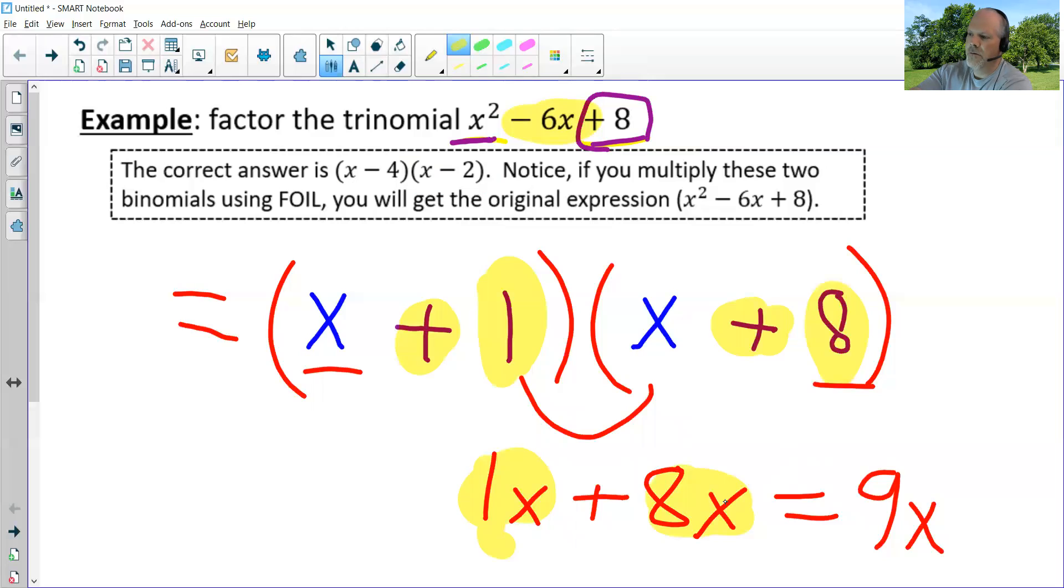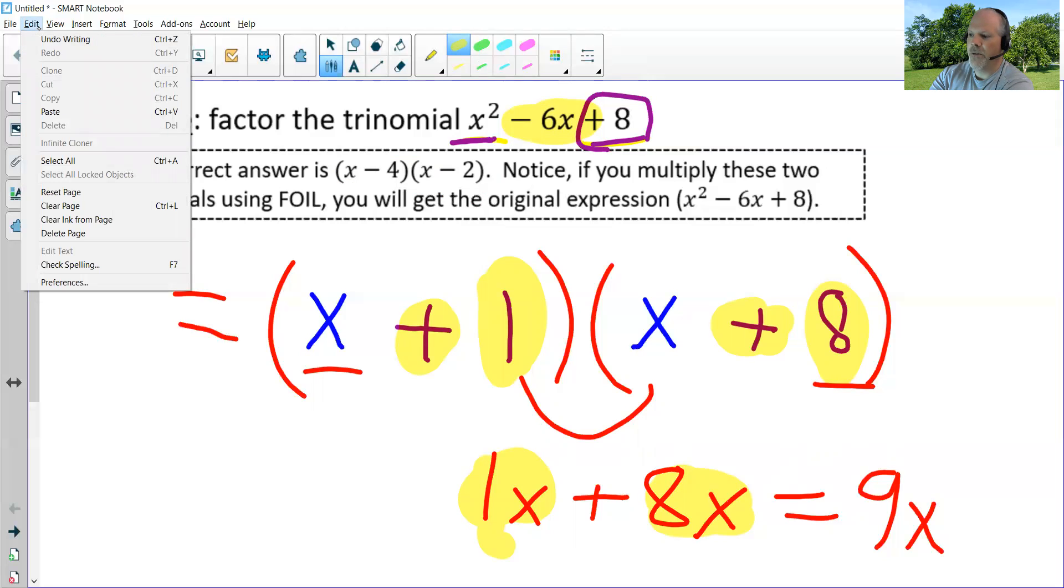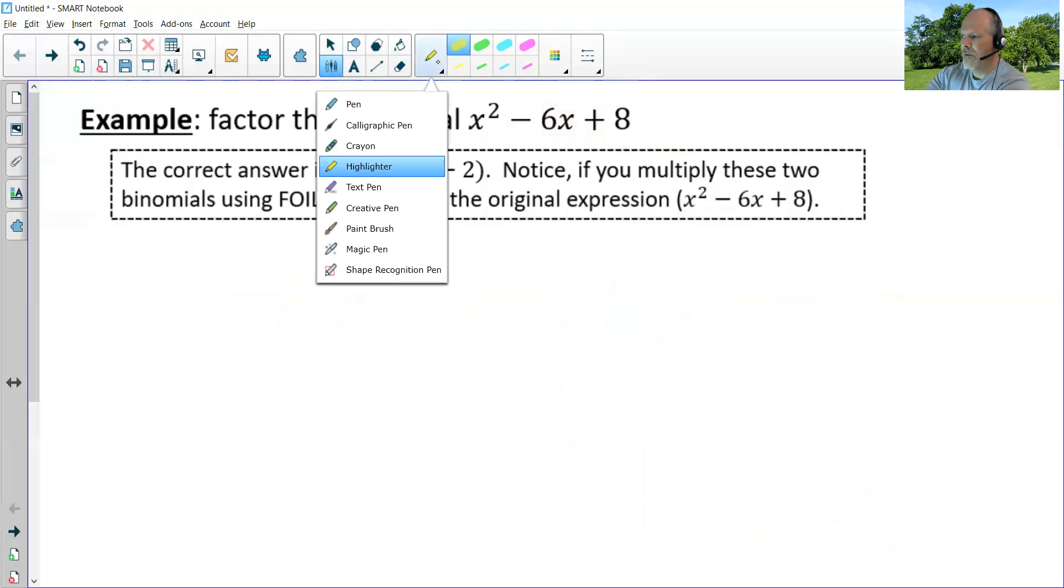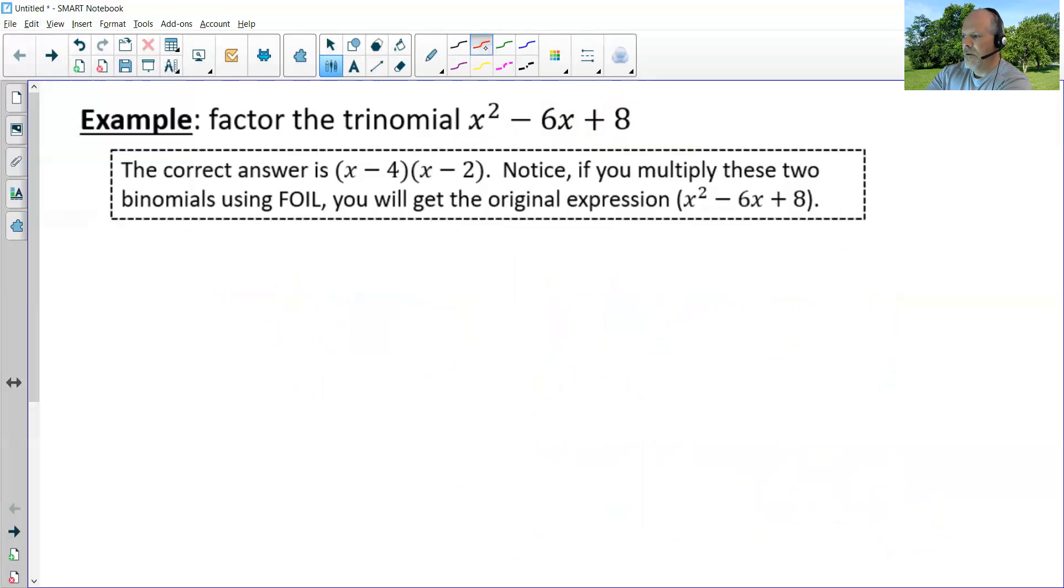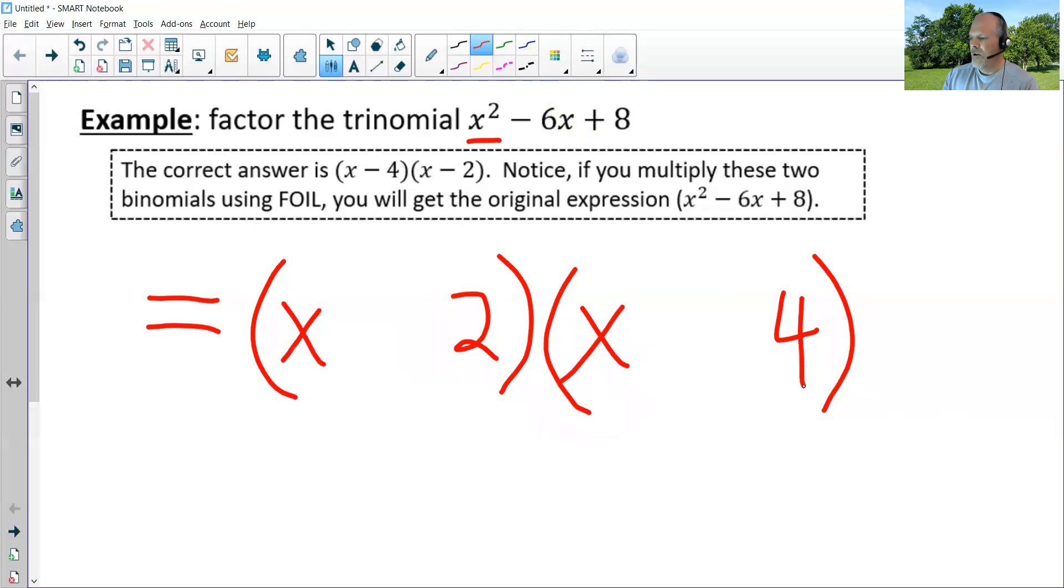So we have to go back to the drawing board, which is why this is called guess and check, and choose different factors of eight. Now I know this is going to be x times x because of the x squared. So let's try two times four because eight could be one times eight or two times four. If I put a two and a four, inside times inside gives me two x.